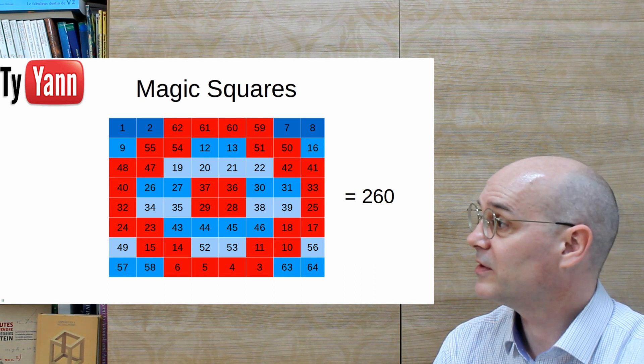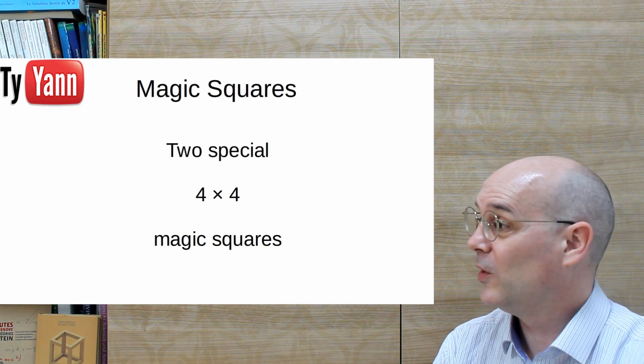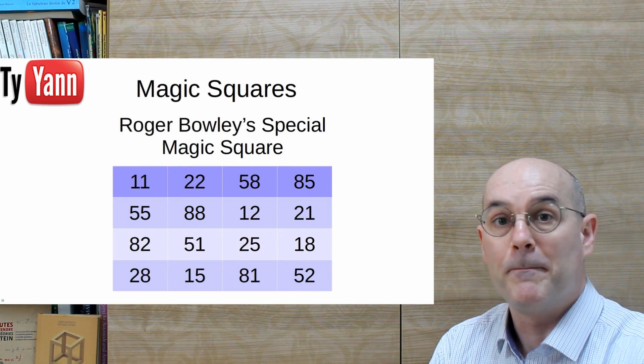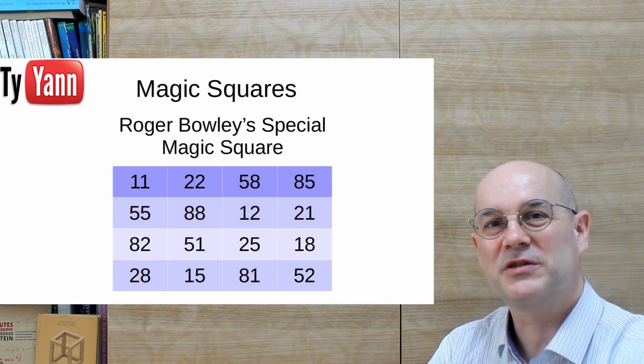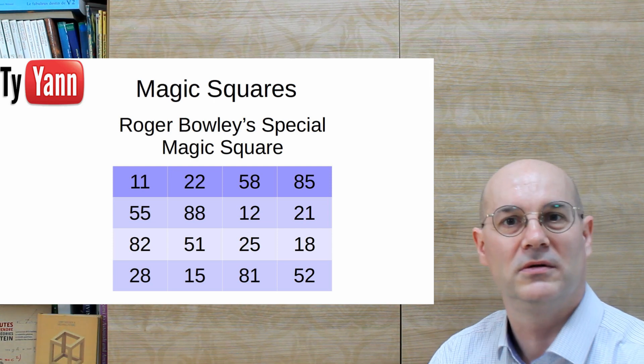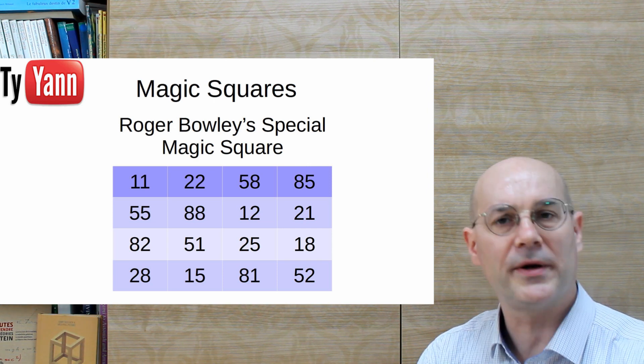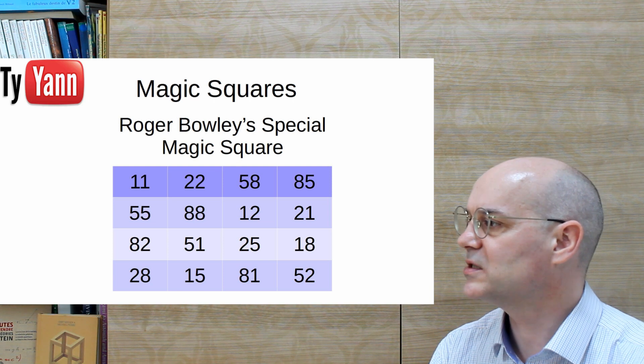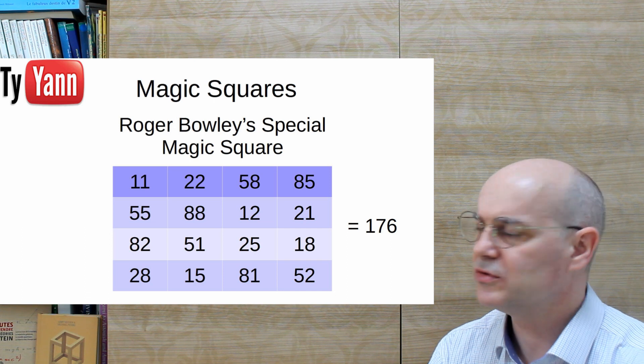So let's see now some two special four by four magic squares. Okay. The first one is Roger Bowley's magic square, special square, special magic square. You can find Roger explaining his magic square in a Numberphile video, which I'm going to put the link somewhere. And so here's this square. It doesn't look like much when you look at it. The numbers are not consecutive and well, it's a magic square with a magic constant equal to 176.